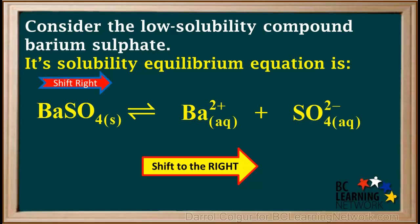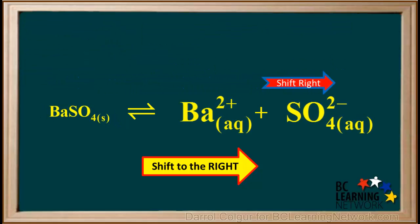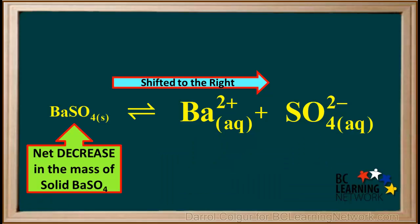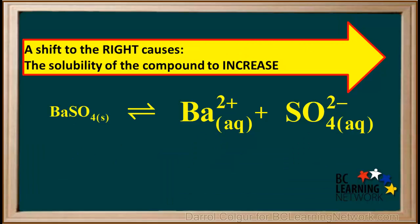Now let's consider the solubility equilibrium equation for barium sulfate again, and see what happens when it shifts to the right. We can see that as a result of shifting to the right, concentrations of the dissolved ions have increased, and the mass of the undissolved solid has decreased. So a shift to the right means there is less undissolved solid remaining and more dissolved ions in the solution — more of the solid dissolves. When the solubility equilibrium shifts to the right, the solubility of the compound increases.